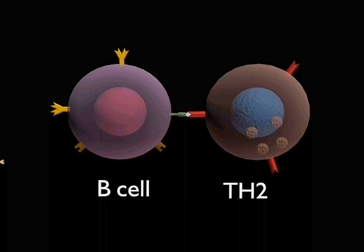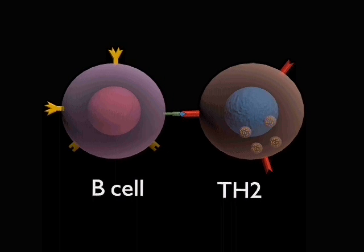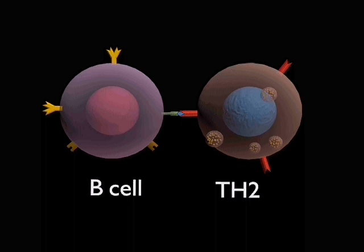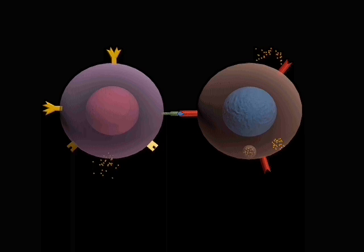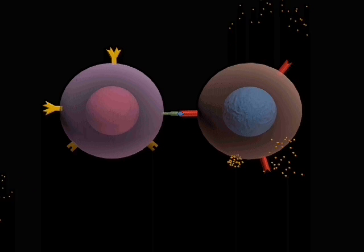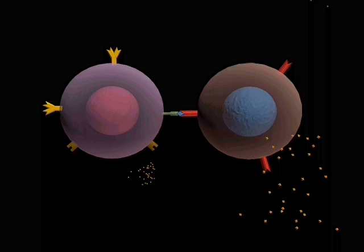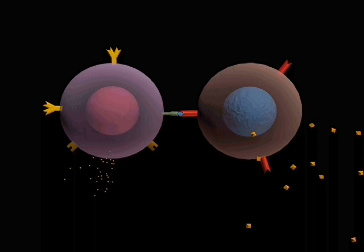Presentation of the antigen to the TH2 cell causes vesicles within the T-cell to fuse with the cell surface and release cytokines, including interleukin-4, which then binds to the interleukin-4 receptors on the B-cells.